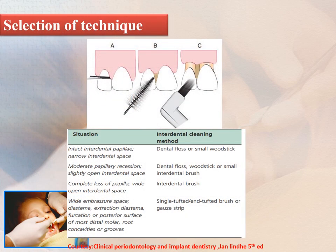A comprehensive cleaning of the oral cavity encompasses interdental cleaning. For Type 1 embrasures — where there are intact interdental papillae and narrow interdental space — dental floss is recommended. For Type 2 embrasures — with moderate papillary recession and slightly open interdental space — interproximal brushes are recommended. For Type 3 embrasures — with complete loss of papillae and wide open interdental space — unitufted or end-tufted brushes are recommended. The thumb rule is: the more the space, the bigger the diameter of the interdental aid used.